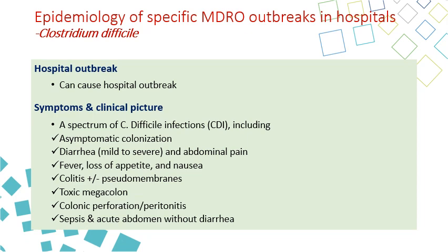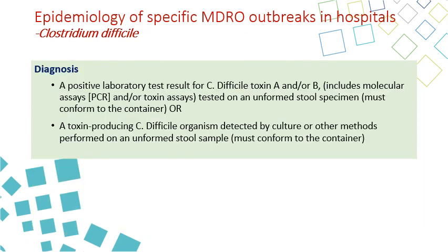Clostridium difficile can cause hospital outbreaks. Symptoms may range from asymptomatic to mild or severe diarrhea, fever, colitis, pseudomembranous colitis, toxic megacolon, colon perforation, and peritonitis — severe complications that can lead to sepsis and sometimes death. Diagnosis is made either by detecting the toxin through positive lab tests for C. diff toxins A, B, or both, performed by toxin assay or PCR.